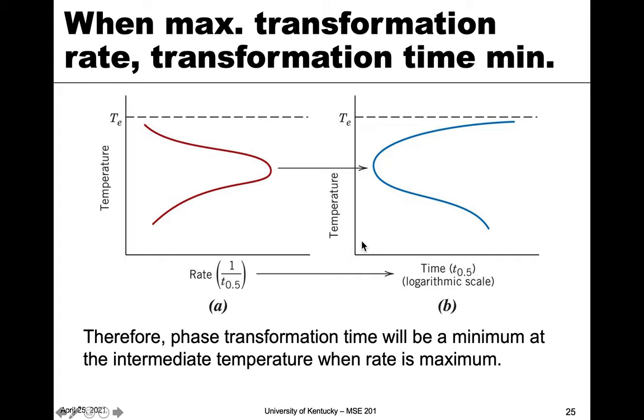And why that's important is because we might want to know at a given temperature how long something takes to transform. So this is basically the transformation time. And so that has the reciprocal relationship of this. And we're going to use this in the next section to look at a transformation diagram to see what we would expect at a given combination of temperatures and times.